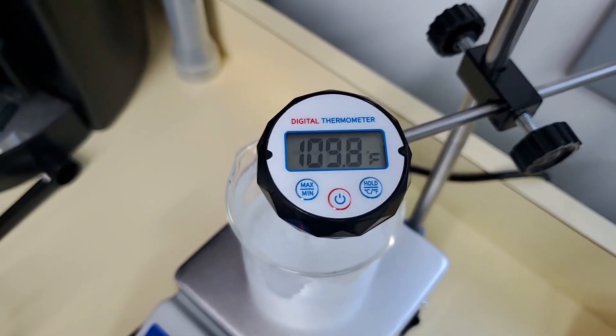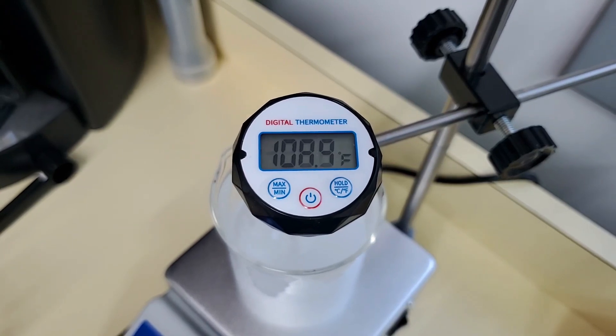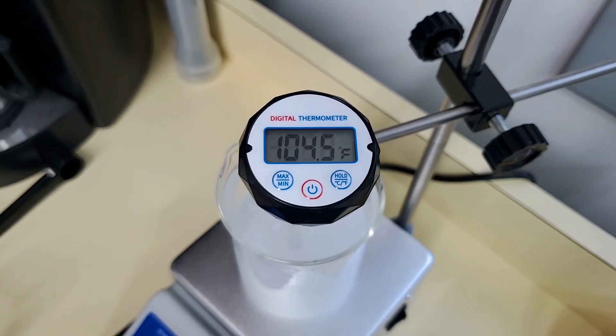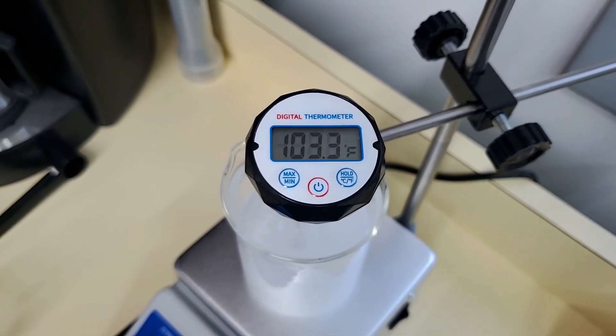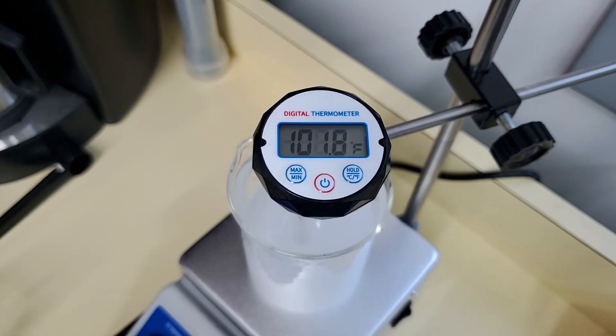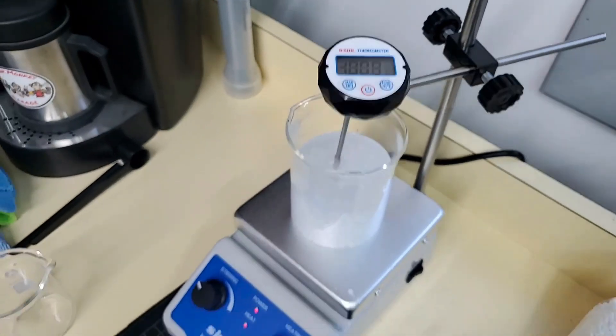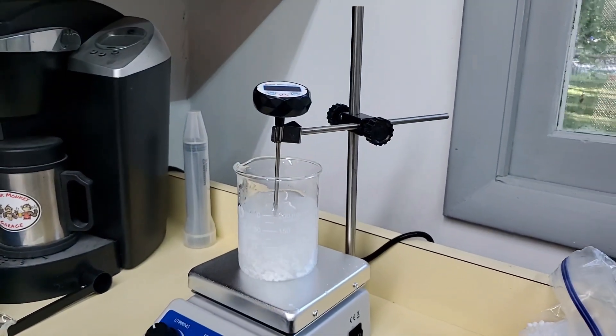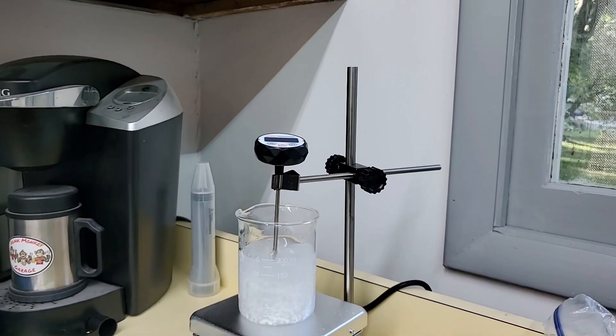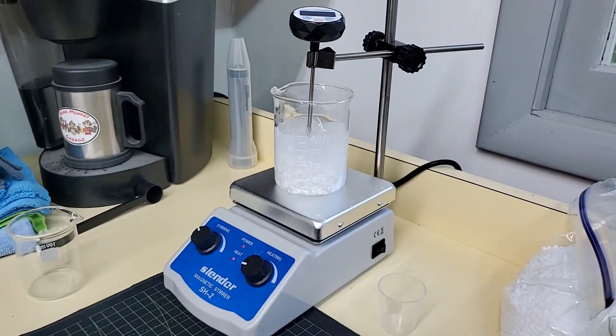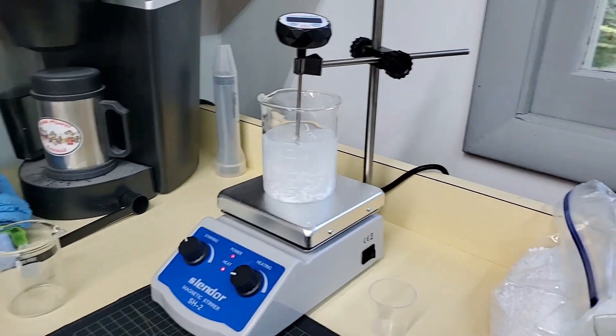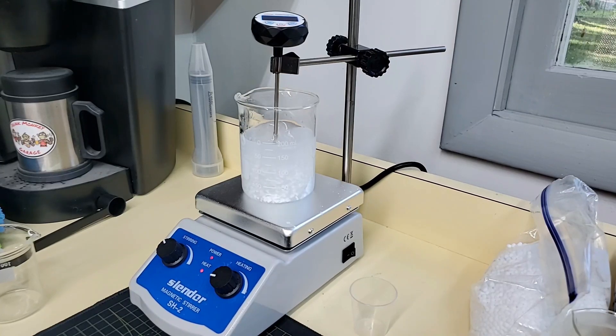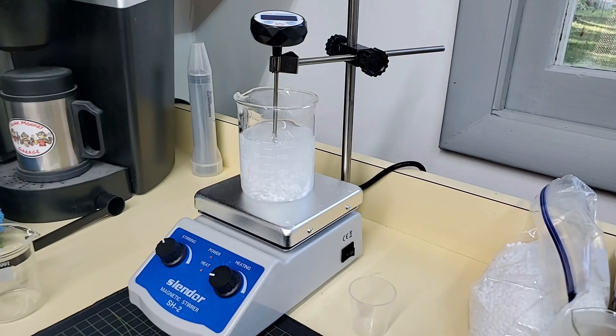And once again you can see how it drops the temperature of the water. So we're going to sit and let this mix and heat back up to 120 degrees. And then after it's back up to temp we're going to let it sit and mix for about another five minutes. So I'll put you on time lapse for that and I'll see you when we get done.